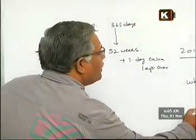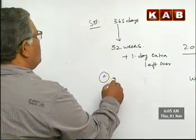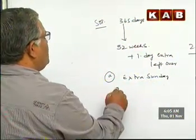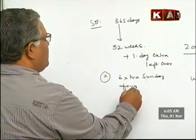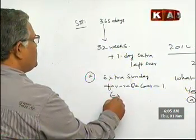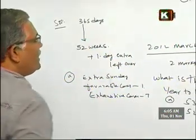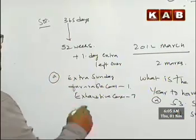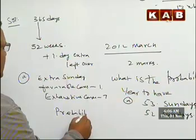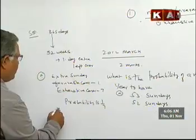For part A, you want the leftover day to be a Sunday — so an extra Sunday should come. The favorable cases are one, and the exhaustive cases are seven. Therefore, the probability is one by seven.